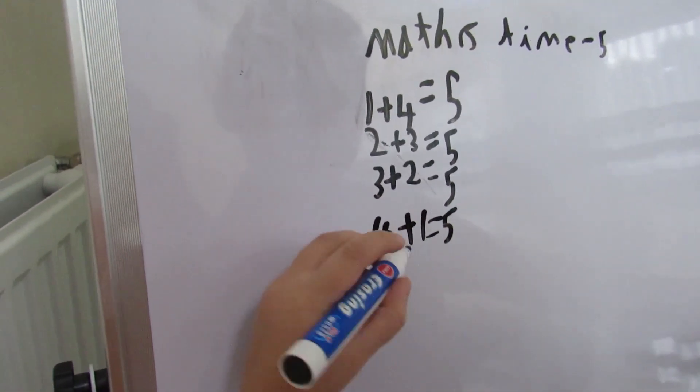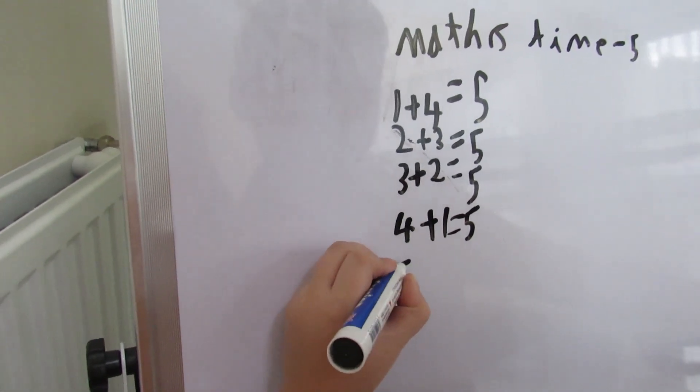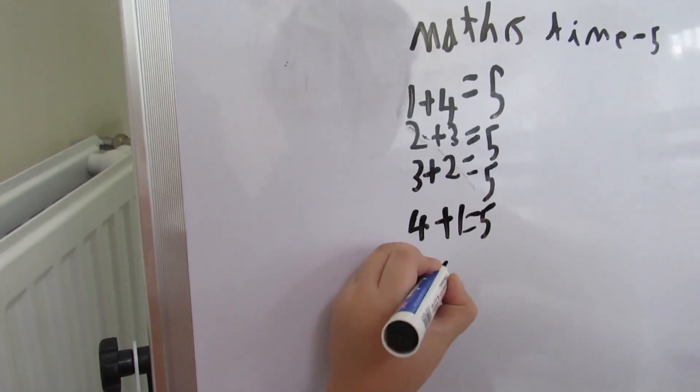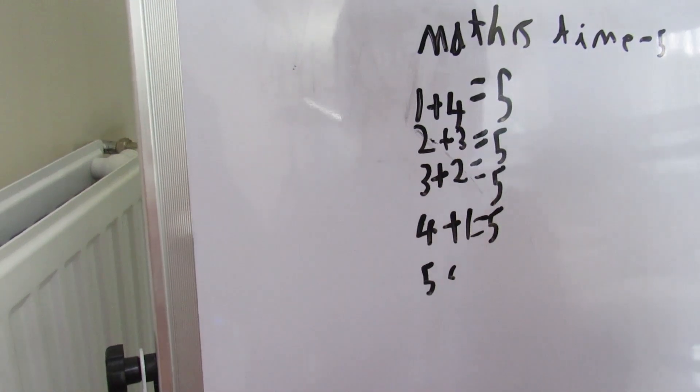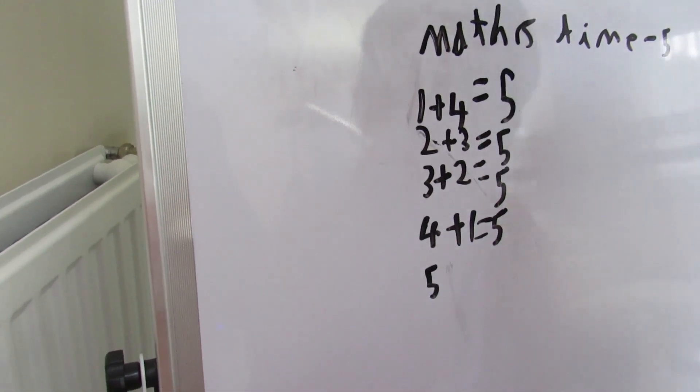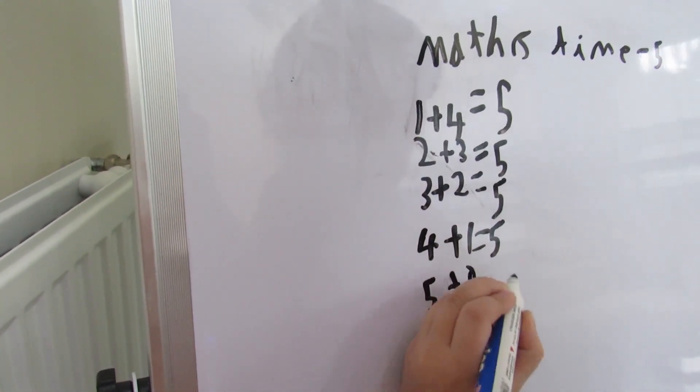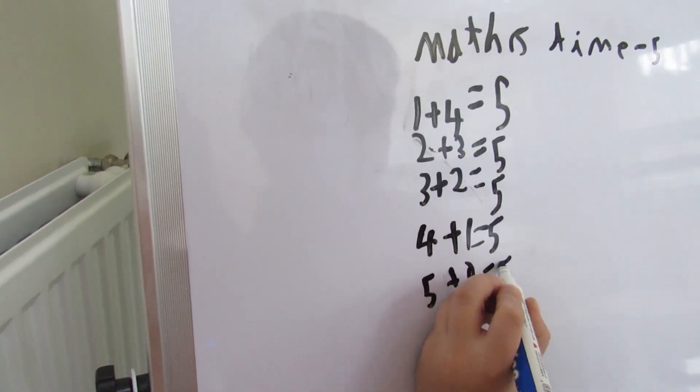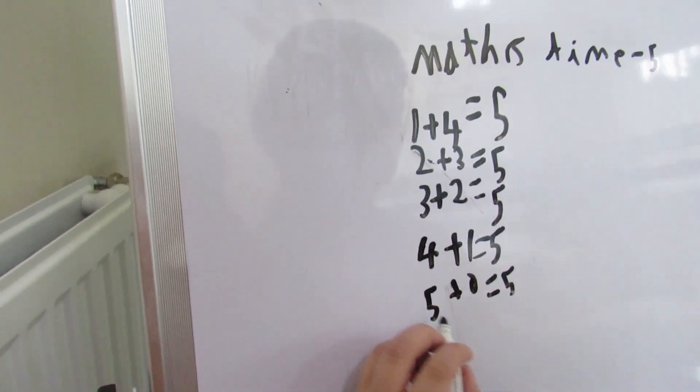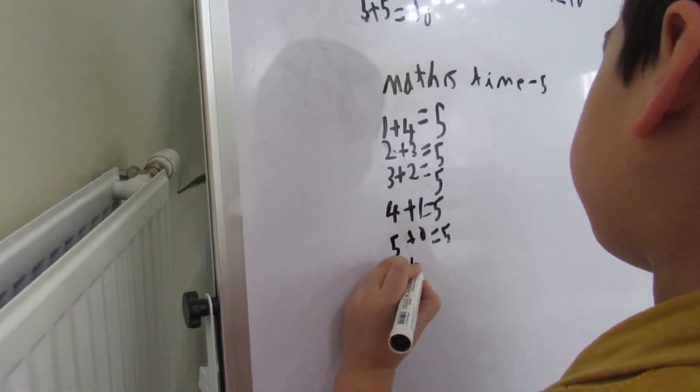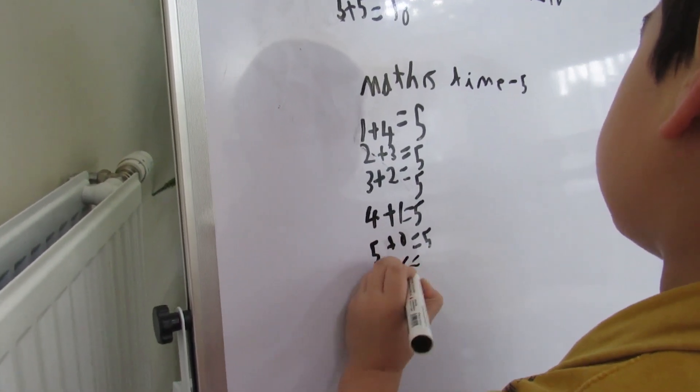The last way is five plus zero equals five. The very last way is zero plus five equals five.